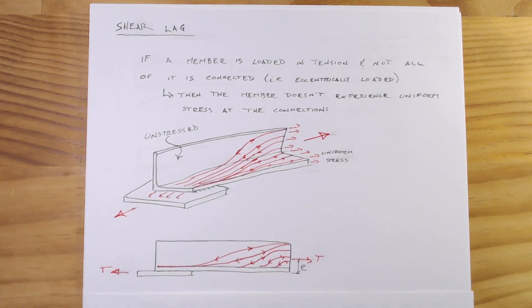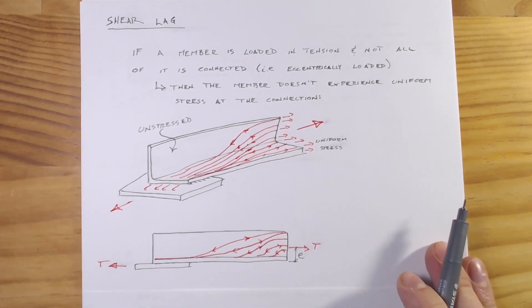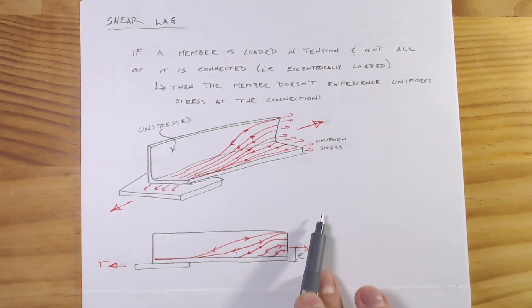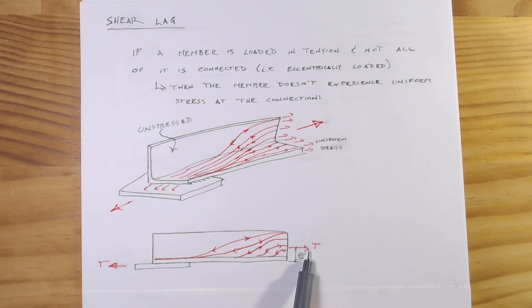An additional thing, if we look at a side view, what we note is that there's going to be some eccentricity as well between where the tension force is acting. As we get towards away from the connection, the tension force is going to be acting at the centroid of the member, and here the tension force is going to be acting at the centroid of this connection. So you have some eccentricity here and so you have kind of this inefficient joint.